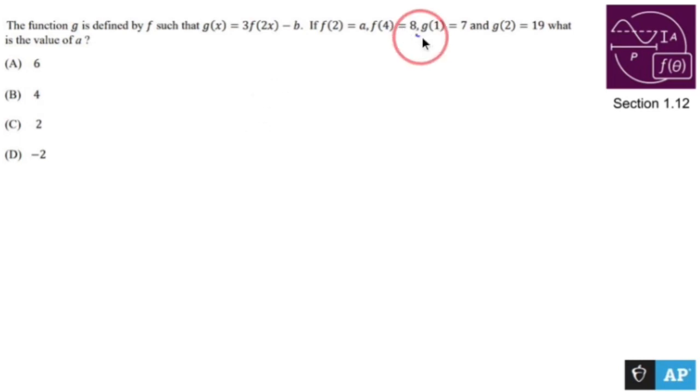Let's find out what g of 1 is. g of x is that guy right there. So g of 1 is going to be 3 times f of 2, replace x with 1, minus b.